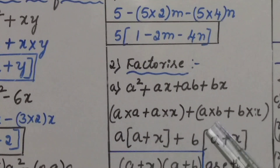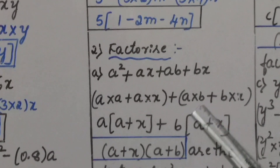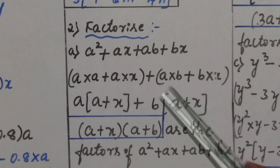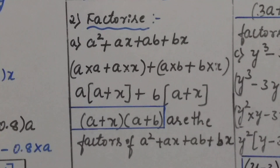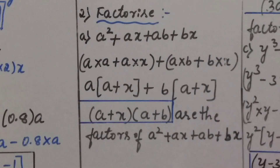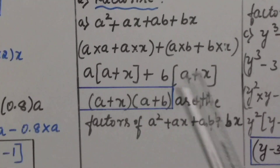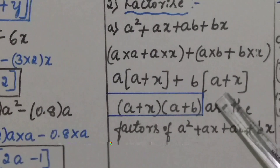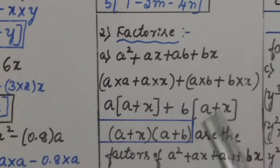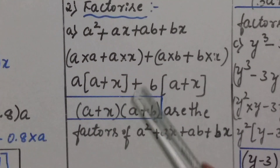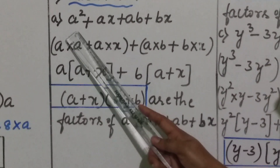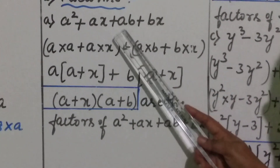Next, in the second group: observe carefully, which is the common factor? b is there in both terms, so b is the common factor. Taking b outside the bracket gives b into a plus x. Now applying the first method — factorization by common factor — both terms contain a plus x as a common factor. Taking a plus x outside the bracket, the remaining term is a plus b. Therefore a plus x into a plus b are the factors of a square plus ax plus ab plus bx.